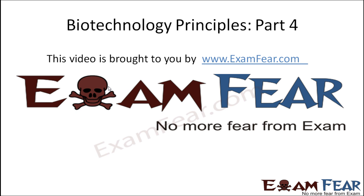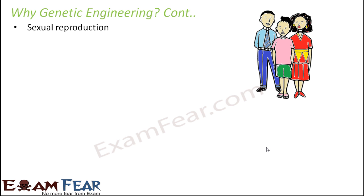This video on biotechnology principles part 4 is brought to you by examfear.com. When we talk about reproduction, we are talking about generating or producing organisms of desirable traits. Organisms are produced by the process of reproduction. There are two modes of reproduction: sexual reproduction and asexual reproduction.